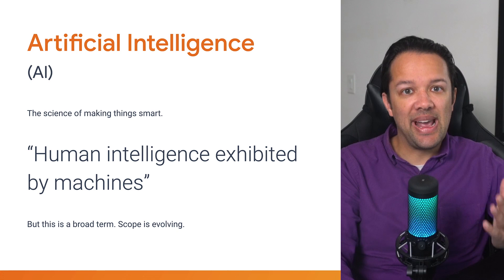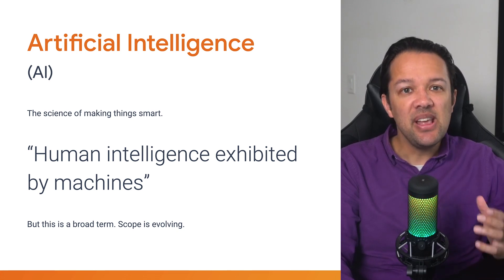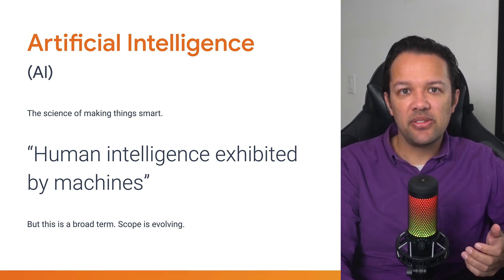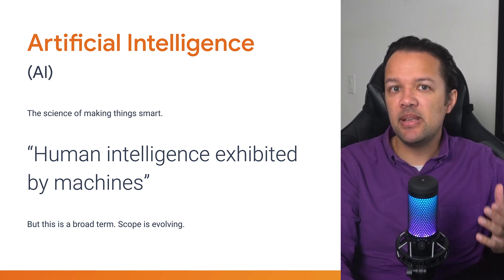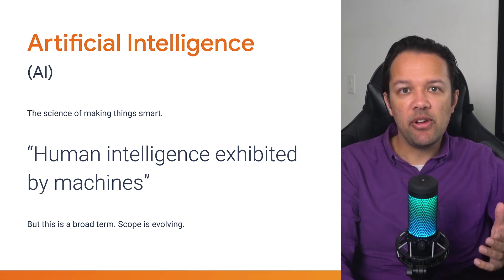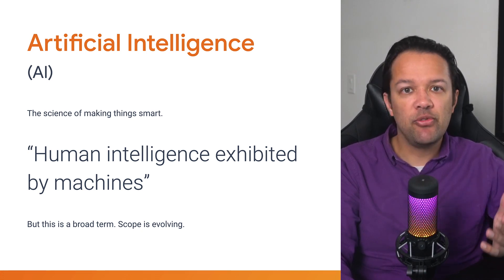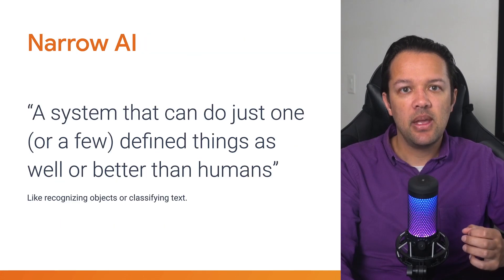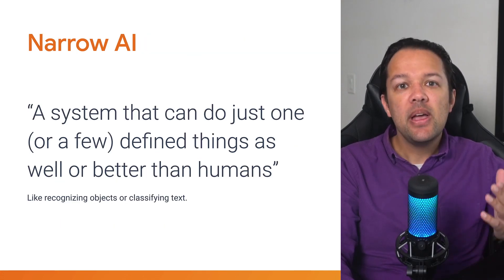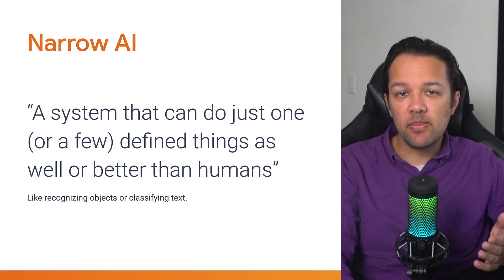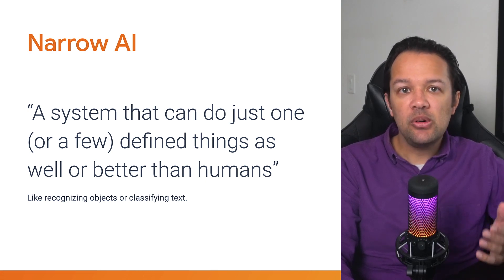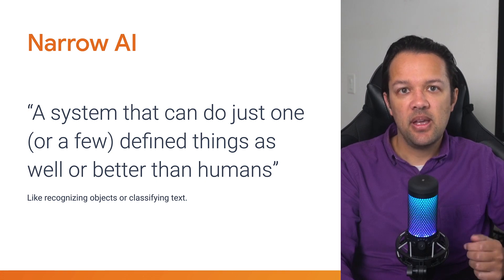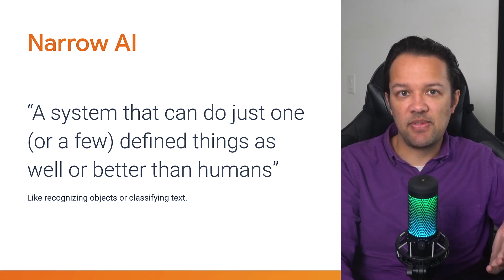Artificial intelligence, or AI for short, is essentially the science of making things smart — or more formally, human intelligence exhibited by machines. However, this is a very broad term, and right now you are able to create systems that are a form of narrow AI. Narrow AI is simply a system that can do one or maybe a few things as well or better than a human expert for that task. A great example would be text classification.